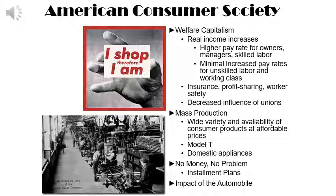This ran concurrently with the mass production of a wide variety of products available at affordable prices. With the invention of the assembly line by the Ford Motor Company as they mass-produced the Model T automobile and other domestic appliances, a new slogan emerged: 'No money? No problem.' Installment plans became a fact of life, and the impact of the automobile on consumer shopping and habits was tremendous — citizens could now travel to other cities and towns with much more ease than by horse-drawn carriage or horseback.